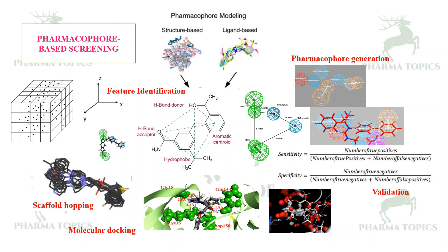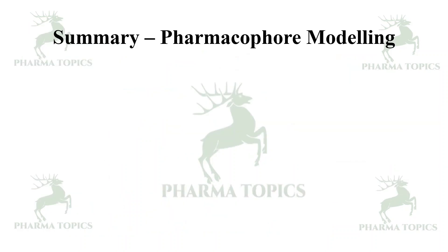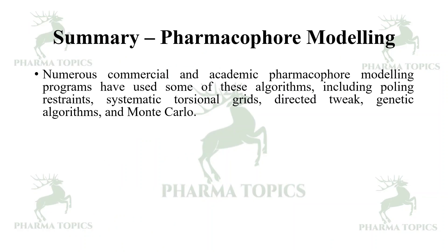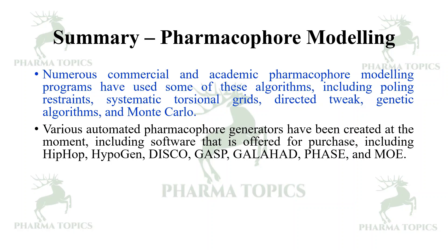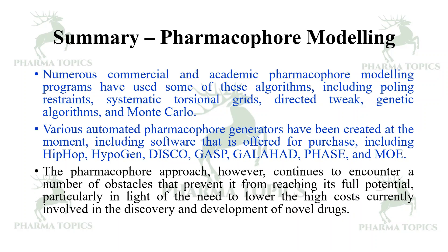This put together is called pharmacophore-based screening. Numerous commercial and academic pharmacophore modeling programs have been used, with algorithms including polling restraints, systematic torsional grids, directed tweak, genetic algorithms, and Monte Carlo. Automated pharmacophore generators include HipHop, HypoGen, DISCO, GASP, GALAHAD, Phase, and MOE. However, the pharmacophore approach continues to encounter obstacles, particularly the need to lower the high costs involved in drug discovery and development.